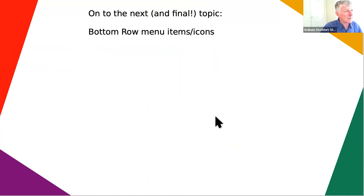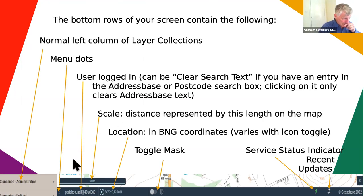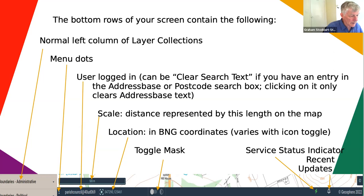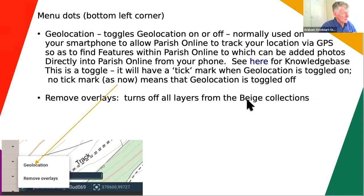We've done the second level menus, the layers pop-up mini menus, and the mini menus when you click on a building or feature. Now we're going to look at the bottom menu items. Imagining your full screen: there's the column of layers on the left hand side, and down at the bottom you've got these three vertical dots leading to another menu. We've got the login account - you can see I've logged in as Parish Council - then we've got location in British National Grid coordinates which is what GeoSphere defaults to, and scale, toggle mask, the service status indicator and the recent updates indicator.